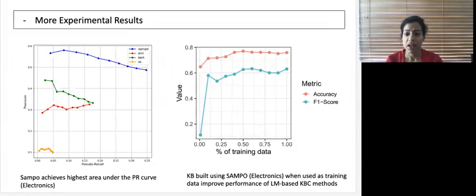We found that it improved the accuracy with a max accuracy of 80%. This indicates that 20% of the implications that are mined by SAMPO cannot actually be discovered by the language model based methods.